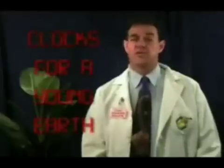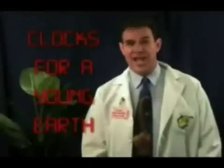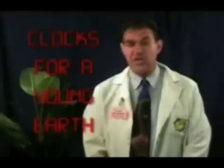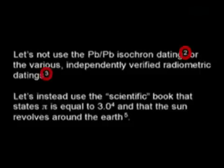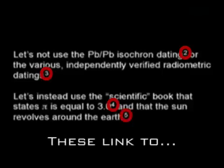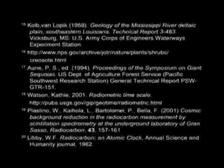What is the age of the earth? 4.5 billion years. When did the creation actually occur? 4.5 billion years ago. And of course we're going to go to the Bible — let's not use the lead-lead isochron dating or the various independently verified radiometric datings. Let's instead use the scientific book that states pi is equal to 3. Let's draw your attention to the superscript numerals placed on these slides. Guess what these link to? References! Yes, the Extant Dodos provide references and so do I.